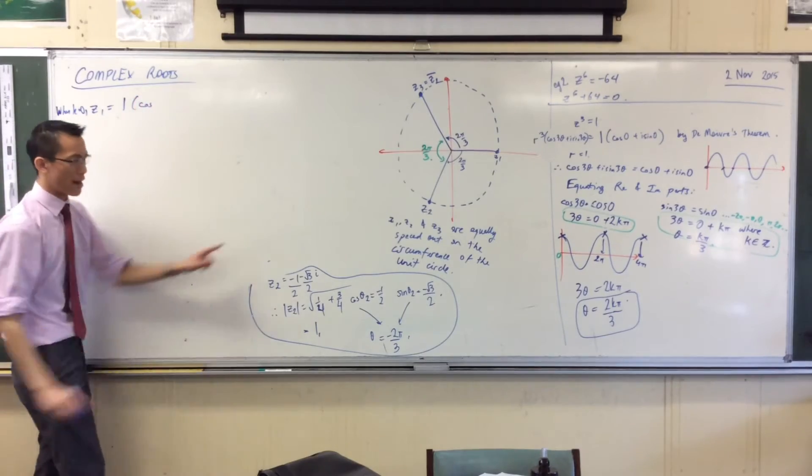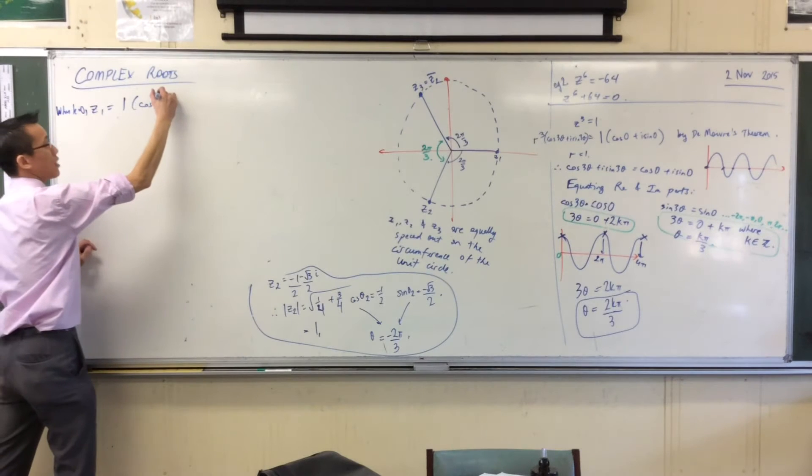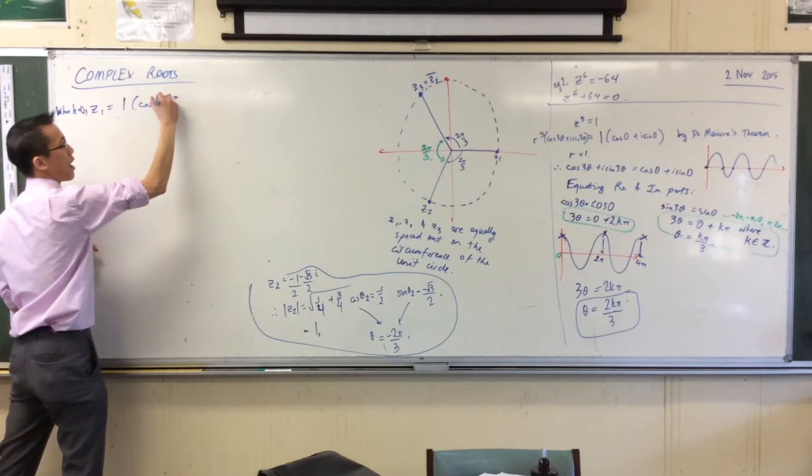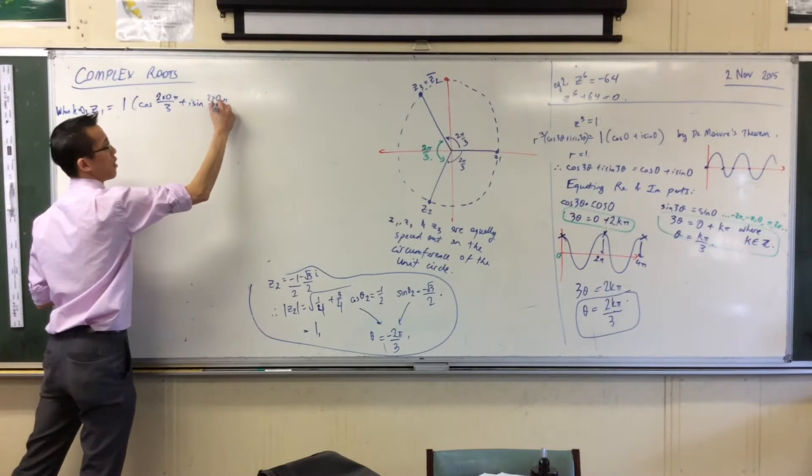cos of, now mark it. This is theta. This is theta here. So really, it's 2 times 0 pi on 3, 2 times 0 pi on 3. You okay with that?